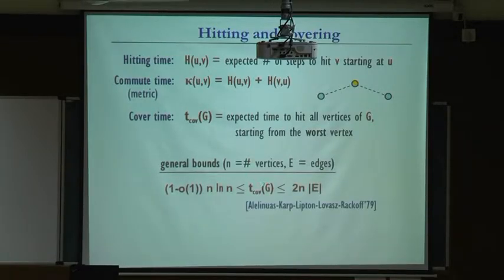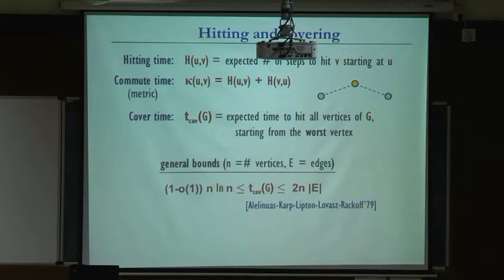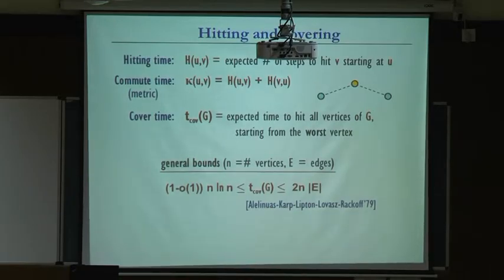There are some general bounds. The complete graph is the fastest: cover time is always at least n log n. With the sharp constant, this is surprisingly hard to prove — it was a conjecture of Aldous proved by computer scientist Uri Feige.